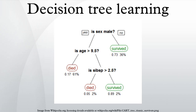Alternative search methods: evolutionary algorithms have been used to avoid local optimal decisions and search the decision tree space with little a priori bias. It is also possible for a tree to be sampled using MCMC, and the tree can be searched for in a bottom-up fashion. See also: Decision Tree Pruning, Binary Decision Diagram, CHAID, CART, ID3 Algorithm, C4.5 Algorithm, Decision Stump, Incremental Decision Tree, Alternating Decision Tree, and Structured Data Analysis.